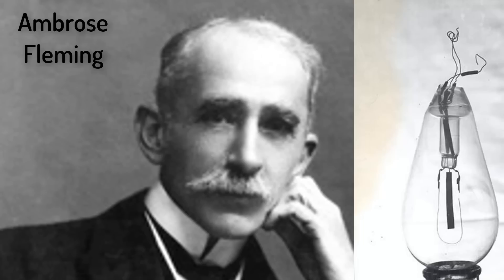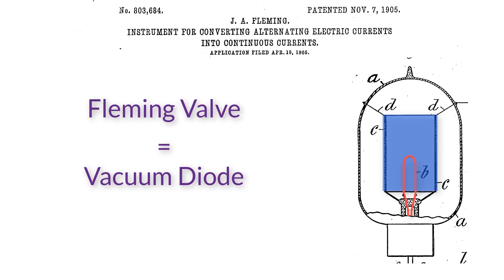He wrote Marconi, quote, I found a method of rectifying electrical oscillations, that is making the flow of electricity all in the same direction. By November, Fleming filed for a patent for what was called a Fleming valve or a vacuum diode, di for two, ode for path.